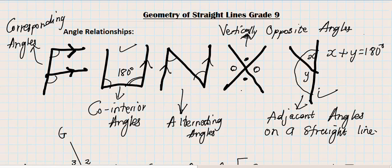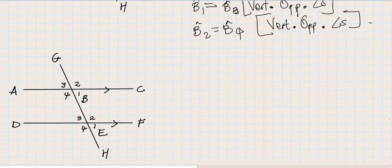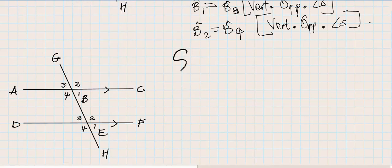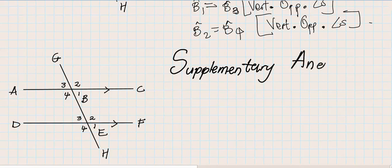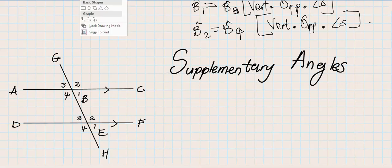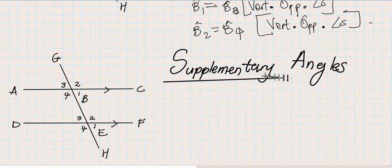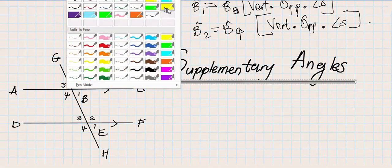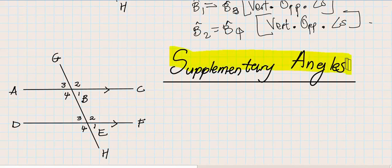Today I want us to speak about adjacent angles on the straight line. But first, a few things I need to highlight. I want to start with supplementary angles. In the introduction video, I mistakenly identified supplementary angles as complementary angles — that's not the case. Supplementary angles are angles that add up to 180 degrees.